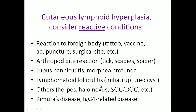When you see a case of cutaneous lymphoid hyperplasia, the first thing you must do is consider a reactive condition. Has the patient had any surgeries, a foreign body, tattoo, vaccine, acupuncture? Is there a reason why this infiltrate is there? Tick bites — not so much mosquito bites, but tick bites — can cause a very profound reactive process called lymphadenoma acutes. Lupus panniculitis, morphea profunda can have this type of germinal centers, as can lymphomatoid folliculitis with rupture of pilosebaceous cysts.